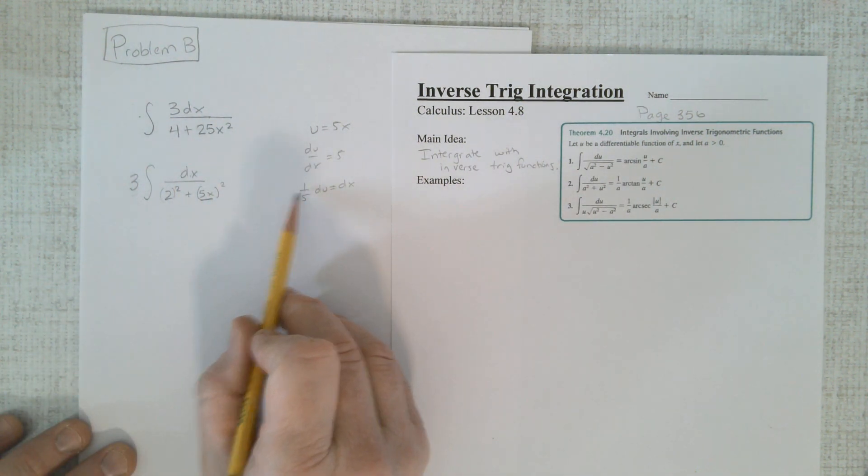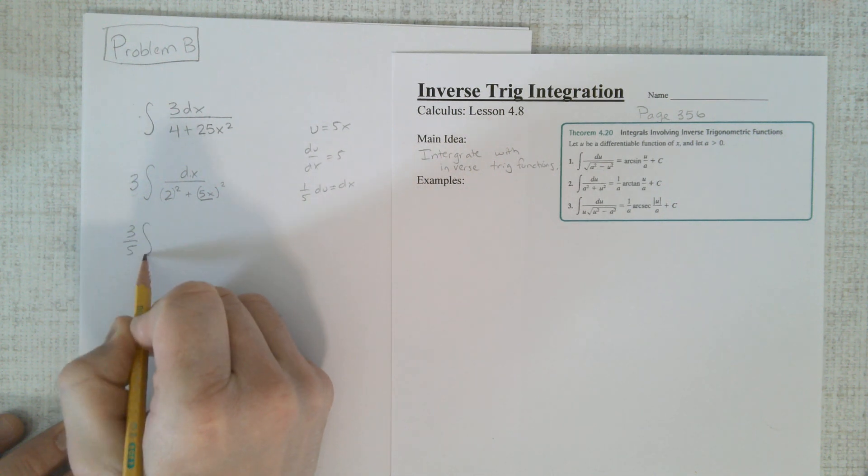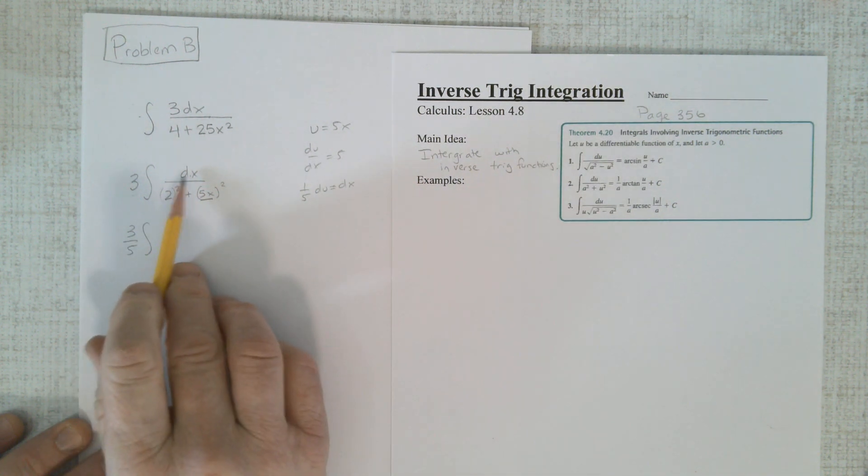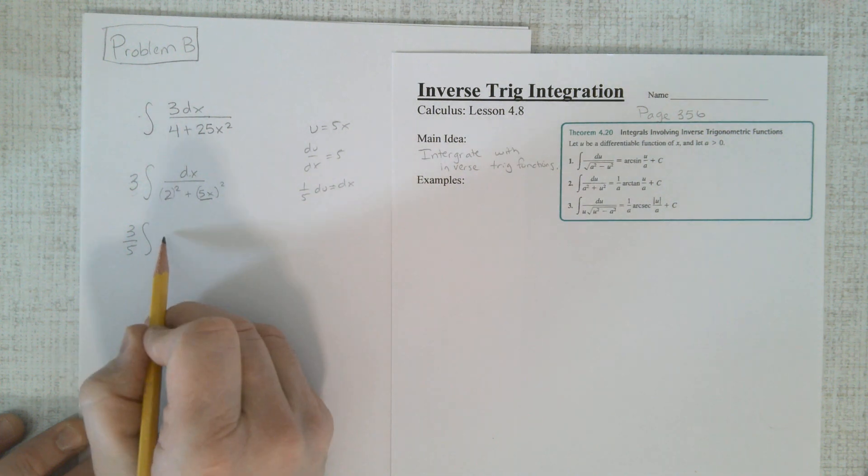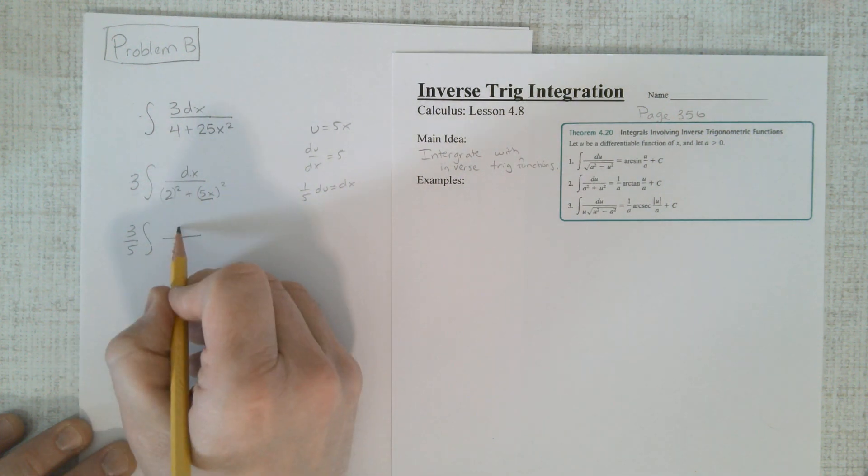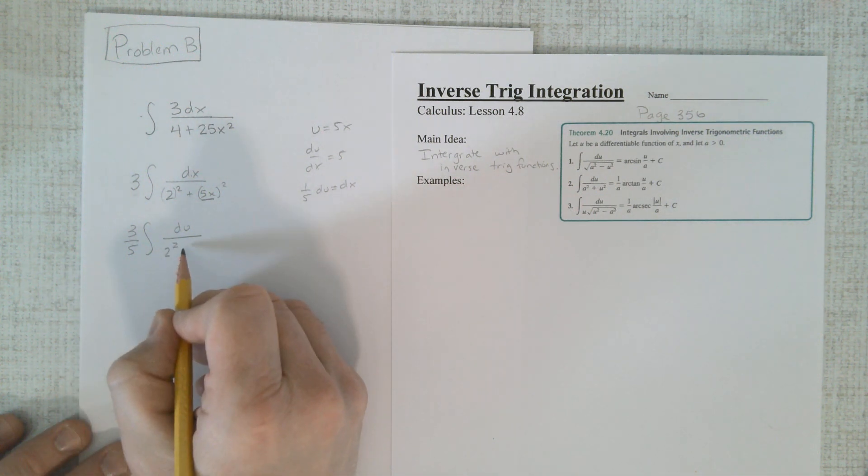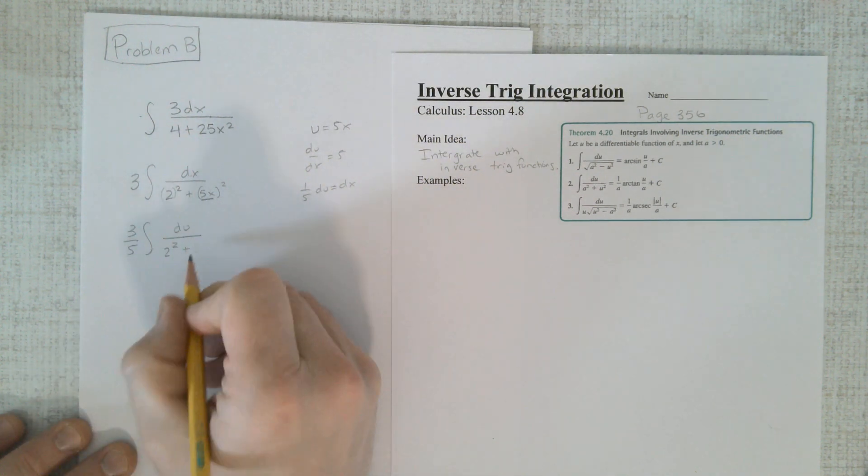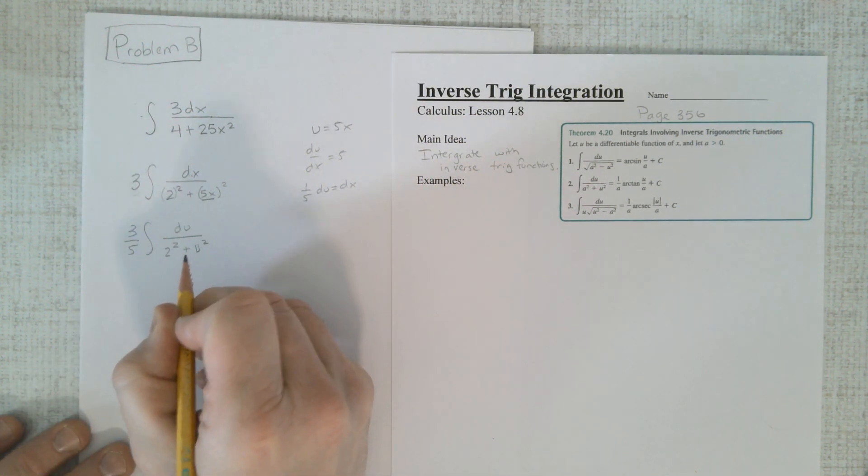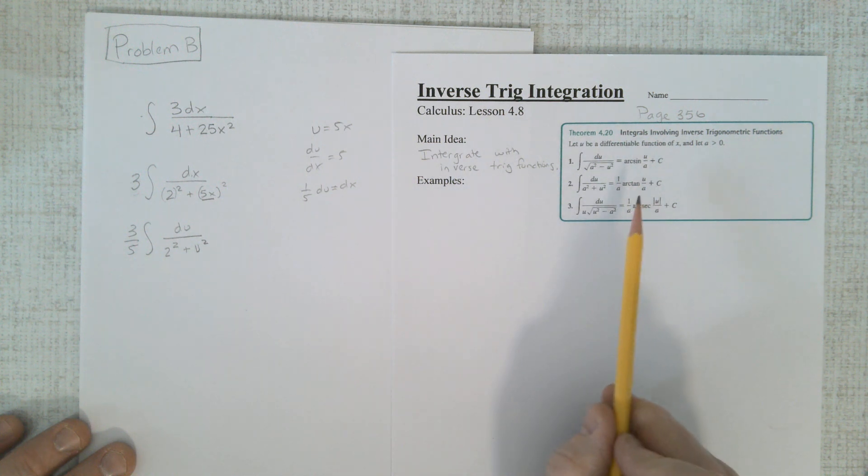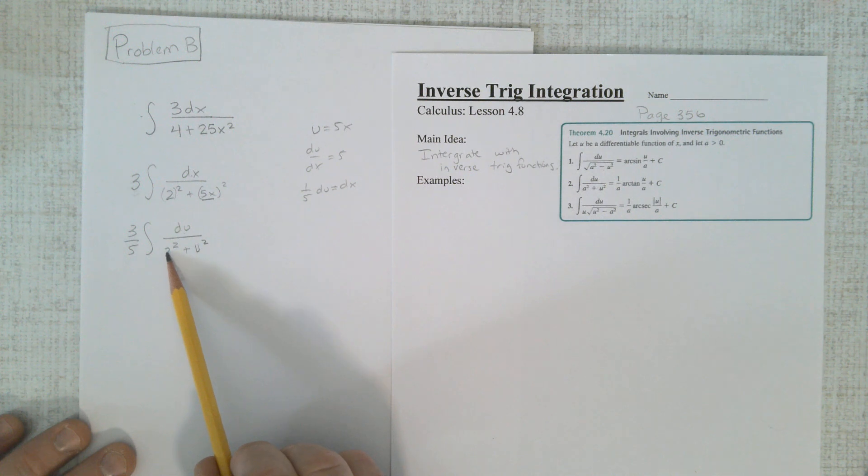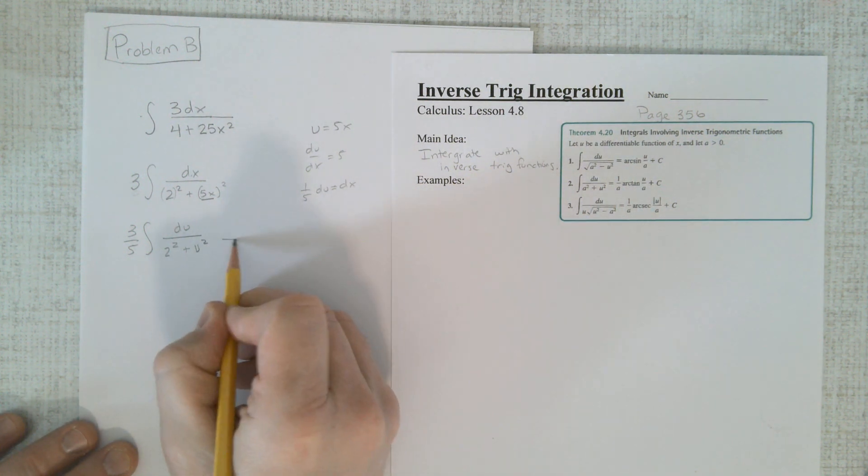I just pulled the constant straight out. That's a 3. My fault. So now I pull out the 1/5th. That is now 3/5ths integral. And dx is now du. And that is 2 squared. And this is 5x. Whoops. I'm in the world of u. So it is now u squared.